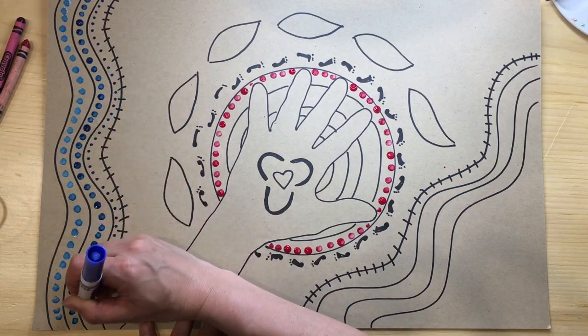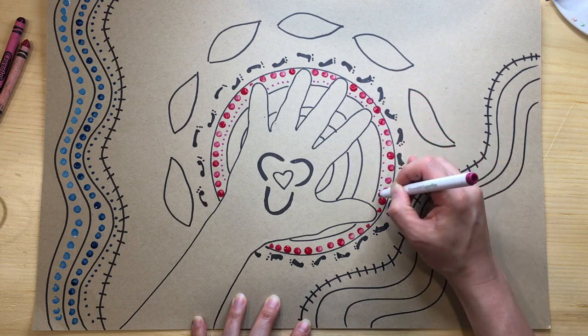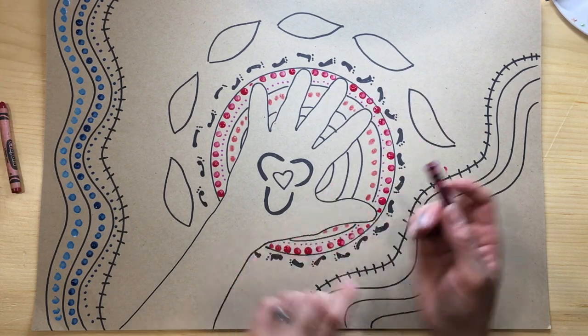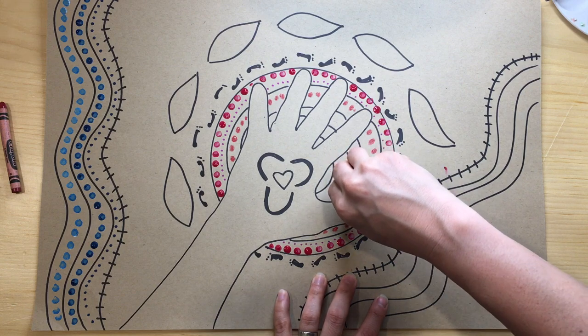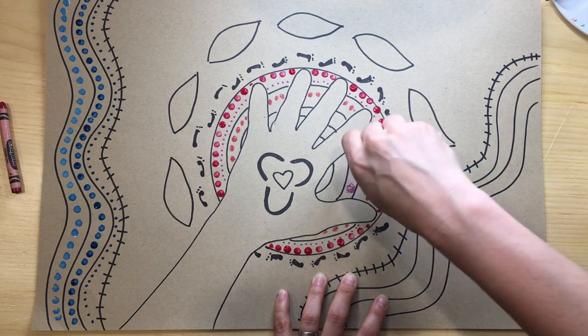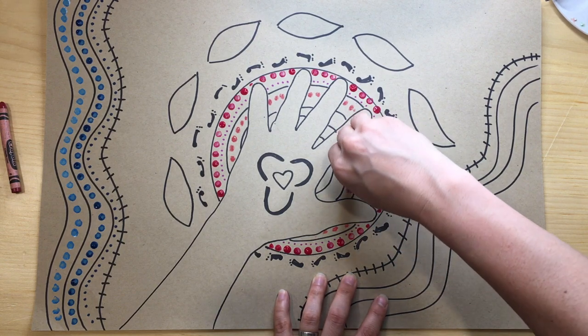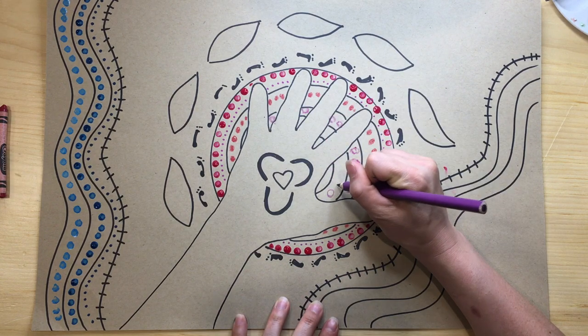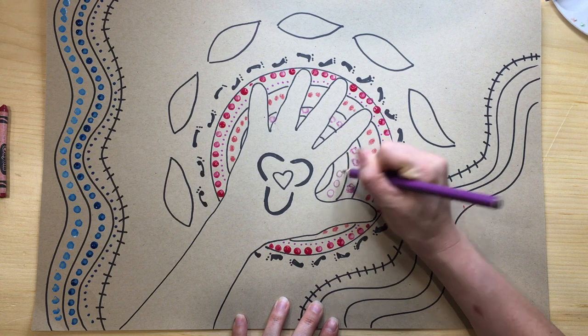You could use markers like this, or even crayons or colored pencils. It works best if the tips are a little bit blunt. You could even draw little circles instead of making a solid dot.